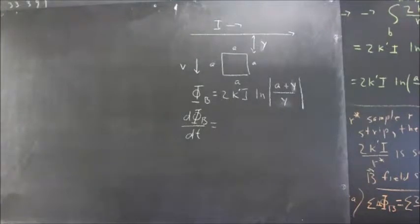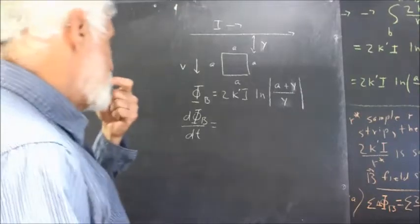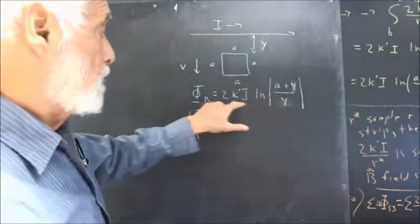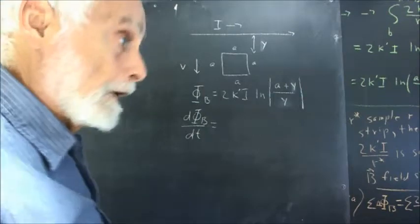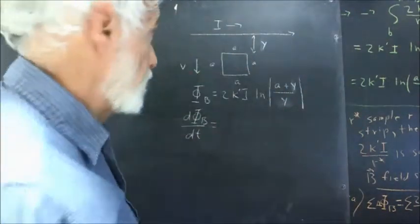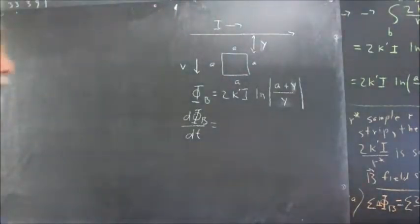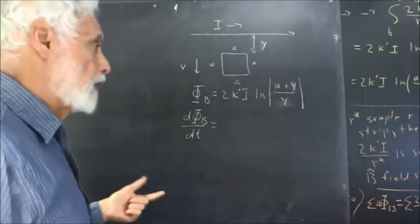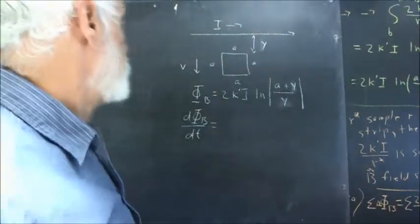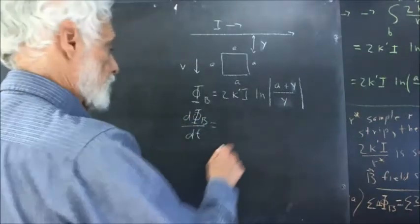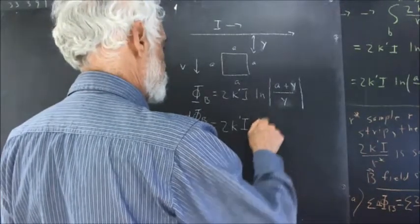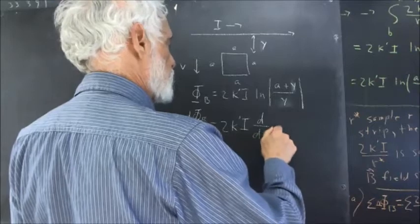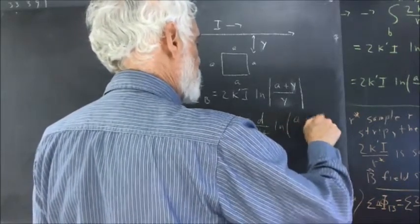That'd be your derivative of your flux with respect to time. So think about that for a second. What's varying here? I is not varying. K prime is a universal constant. A, the side length, doesn't vary. The only thing that's varying is your distance y from the current source — from the x-axis in this case. So the only thing we have to take a derivative of is the y. We're going to get 2k prime pi times the derivative with respect to t of the natural log of (a + y) over y.